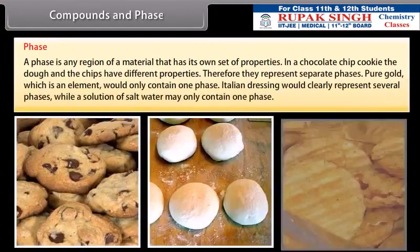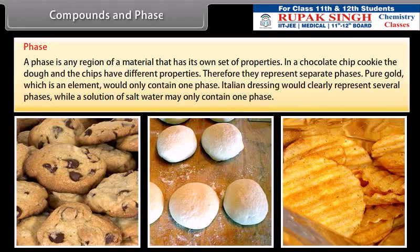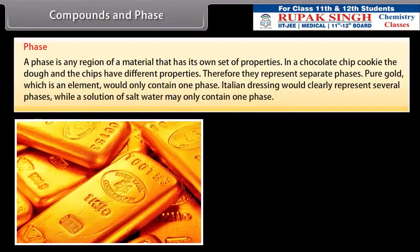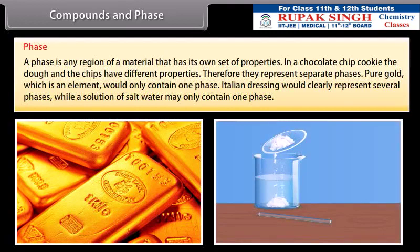A phase is any region of a material that has its own set of properties. In a chocolate chip cookie, the dough and the chips have different properties; therefore, they represent separate phases. Pure gold, which is an element, would only contain one phase. Italian dressing would clearly represent several phases, while a solution of salt water may only contain one phase.